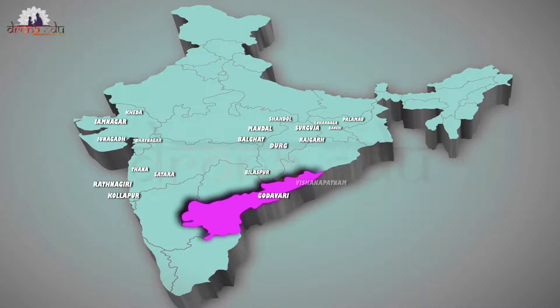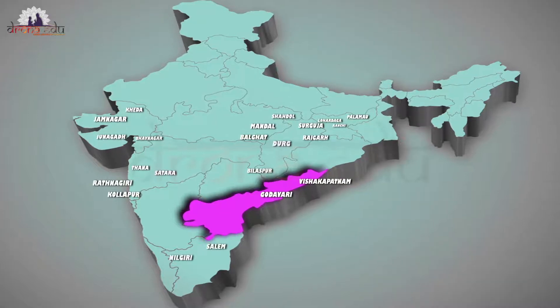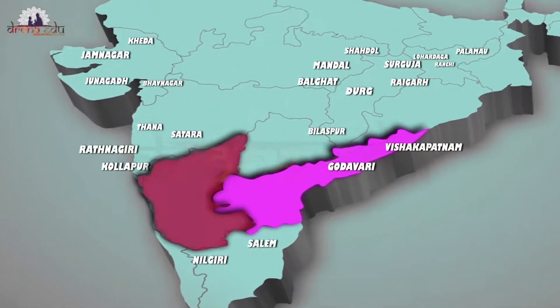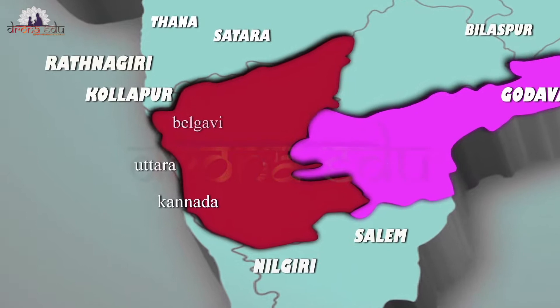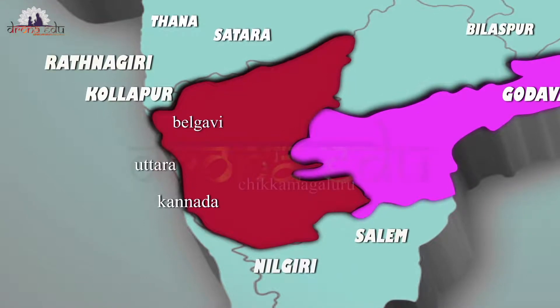Godavari and Visakhapatnam in Andhra Pradesh. Salem and Nilgiris in Tamil Nadu. Uttara Kannada, Belagavi and Chikmagalur districts in Karnataka.